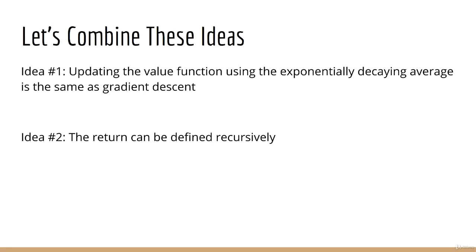So what's so significant about this? Well, now we're going to put together these two ideas. Idea number one is that updating the value function using the exponentially decaying average is just like gradient descent. Idea number two is that the return can be defined recursively.